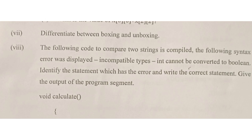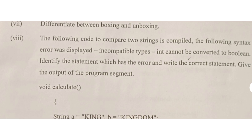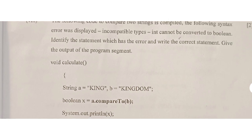Section B question seven: difference between boxing and unboxing. Boxing is the process of converting a primitive data type to the corresponding object of its wrapper class. Unboxing is converting the object of the wrapper class back to the primitive type. Primitive to object is boxing; object to primitive is unboxing.